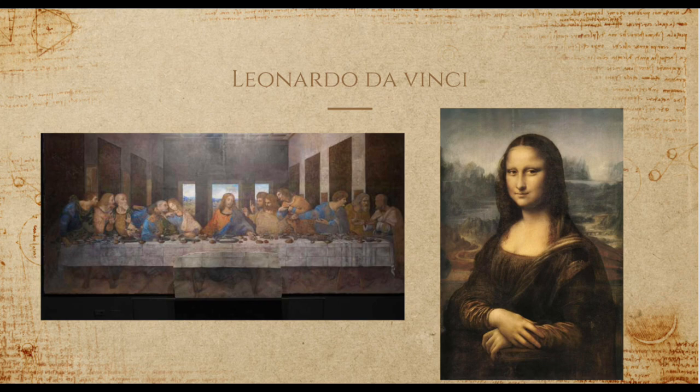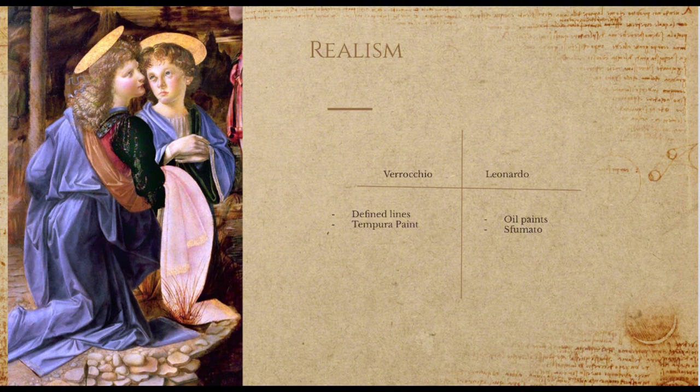Leonardo quickly started to surpass his teacher. Verrocchio had invited Leonardo to collaborate on some of his paintings, like Tobias and the Angel and the Baptism of Christ. In the Baptism of Christ, Leonardo painted the angel on the far left. Verrocchio's angel has clear and sharp lines, but Leonardo's has no lines to determine the jawline — it's a smooth fade which creates a more human-like portrayal. This fade is also much easier to do with oil paints rather than tempera, which Verrocchio used, as determined by x-ray screenings.